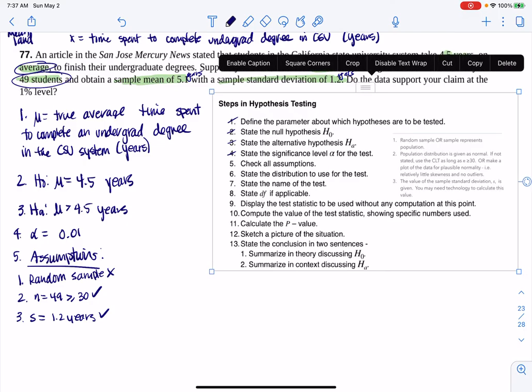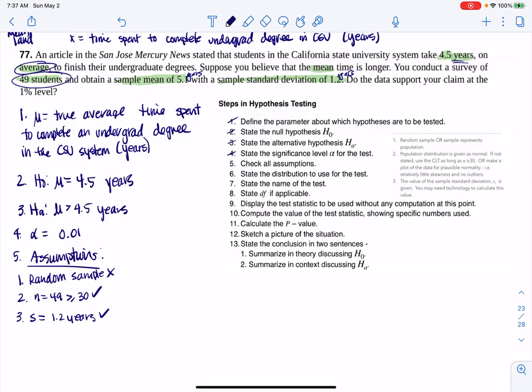Step six, I'm going to state the distribution because I'm in mean land. I'm going to use the T distribution rather than the standard normal curve. It's got a slightly lower peak, slightly higher tails. Step seven, the name of the test - we're going to do a one sample mean T test. For step eight, if my sample size is 49, I have 48 degrees of freedom.